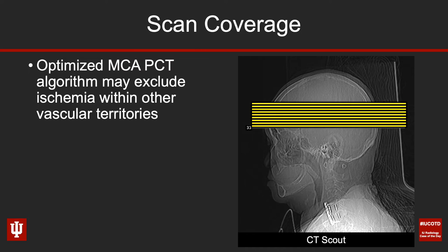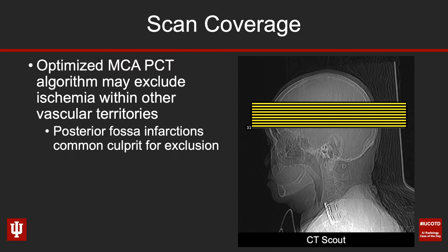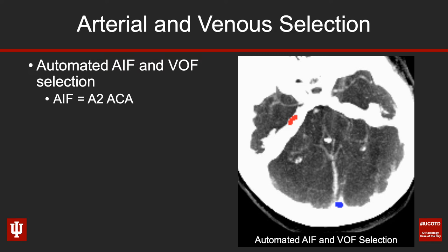Oftentimes CT perfusion is done in a manner to optimize assessment of the middle cerebral artery territory. The yellow bars show the field of view acquired in this case, so anything beyond that is excluded. This is one of the reasons why the posterior fossa is oftentimes a challenge with perfusion CT imaging — in many cases it's excluded from the field of view. Be aware of these blinders: know what you have imaged, and importantly, know what you haven't imaged.